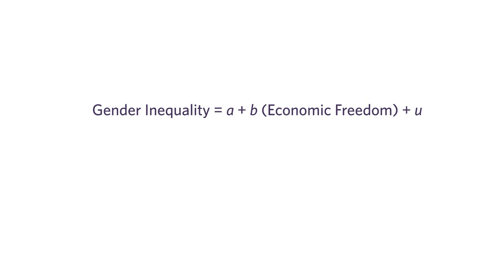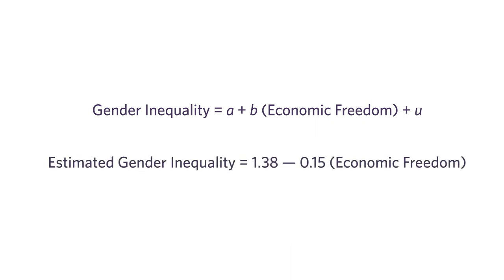There are technical things that go on in the background, but when we run this through the appropriate statistical analysis — what we call regression analysis — it comes back and tells us the best value for A is 1.38 and the best value for B is negative 0.15. Those two values give you the red line that comes as close to as many data points as possible. We walk away with the idea that two things are happening: economic freedom is associated with gender inequality according to this equation, and there's all that noise that we can't account for. When we blow away the noise, this is the relationship we find.